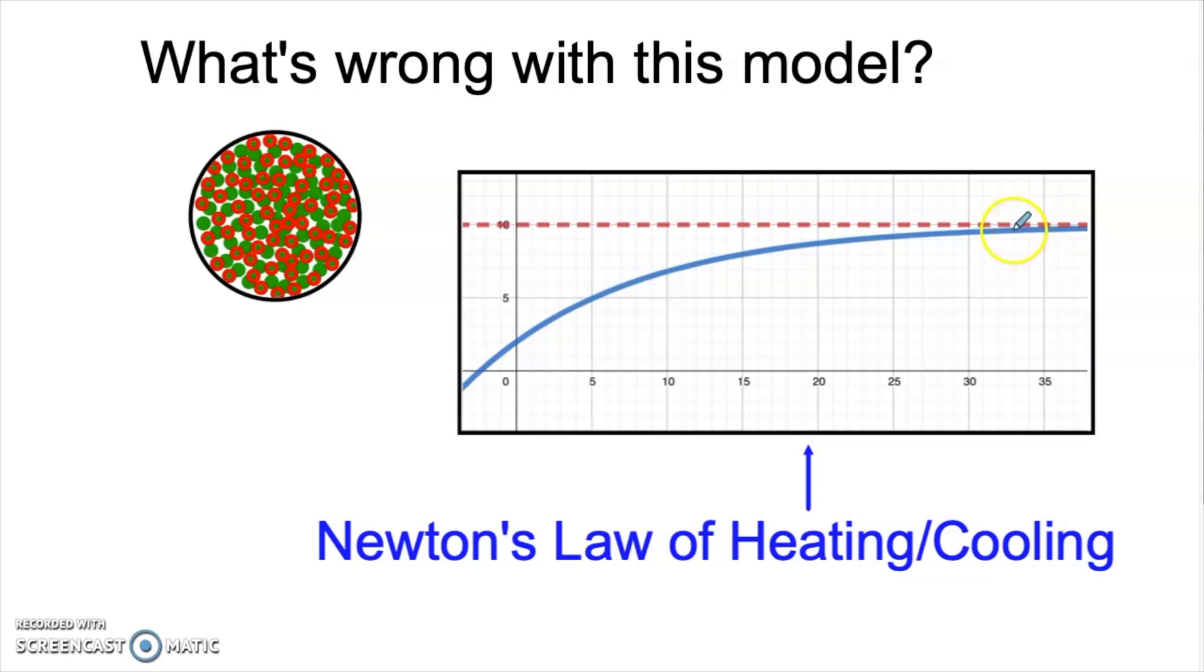Eventually when we get towards the cap, we're not going to be creating a lot of new bacteria because there just isn't room for them anymore. But in the beginning, if we only have one or two bacteria, we shouldn't be seeing this fast rate of growth. It should be taking a while to get going in the beginning and then eventually speeding up and slowing down again. So this is where Newton's law of heating and cooling is even still insufficient for a natural growth model like bacteria.